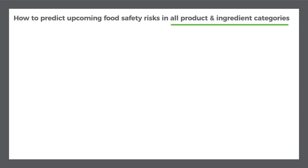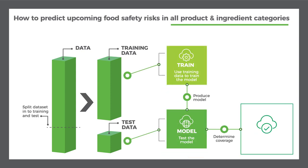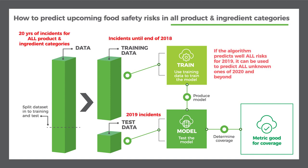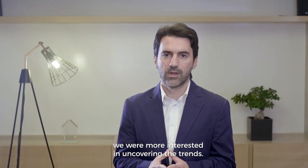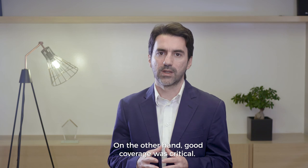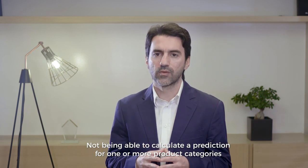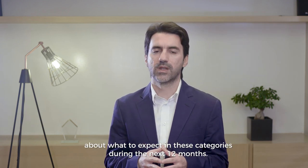Which ingredient categories will face increased recalls and border rejections in 2020 compared to 2019? To monitor the accuracy of the prediction in this experiment, we used the absolute mean percentage error by comparing the actual numerical value for 2019 with the ones predicted by the model using the historical values until the end of 2018. Having an inaccurate prediction was not critical in our scenario — we were more interested in uncovering the trends. On the other hand, good coverage was critical. Not being able to calculate a prediction for one or more product categories would mean that we would have no clue about what to expect during the next 12 months.